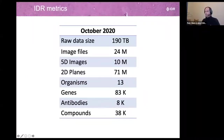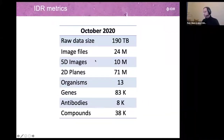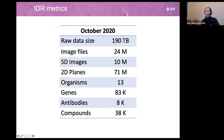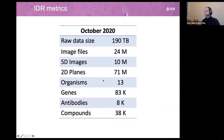The IDR grows and grows. These numbers are almost already outdated - it went strong into November, December and January. So 190 terabytes of data. Interestingly, you can count not only image files but also genes, antibodies and compounds, because these are the bits of data on the images. We also have other, more biological measures of how to judge the strength of the IDR.